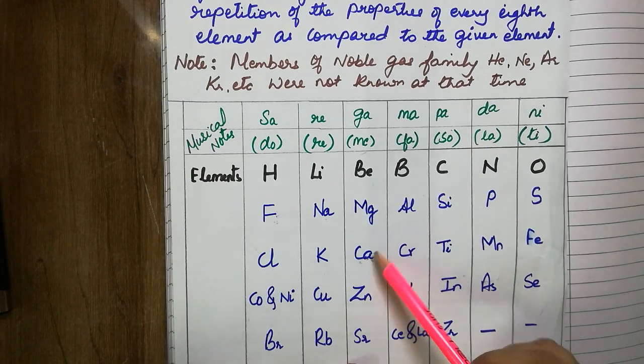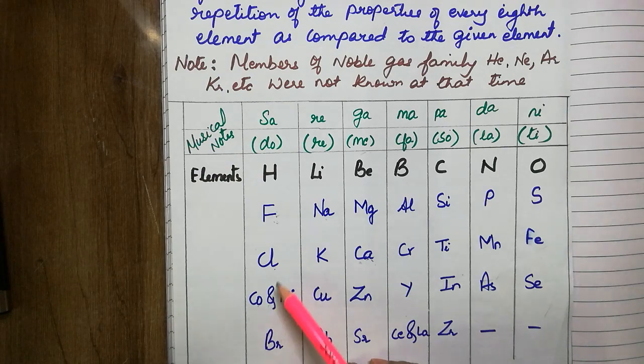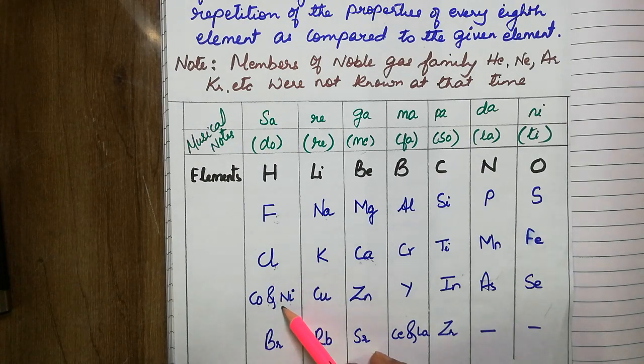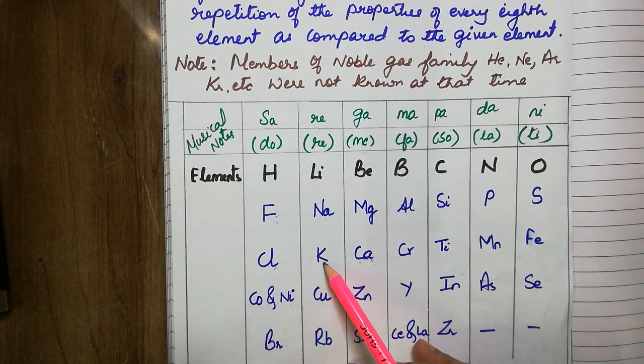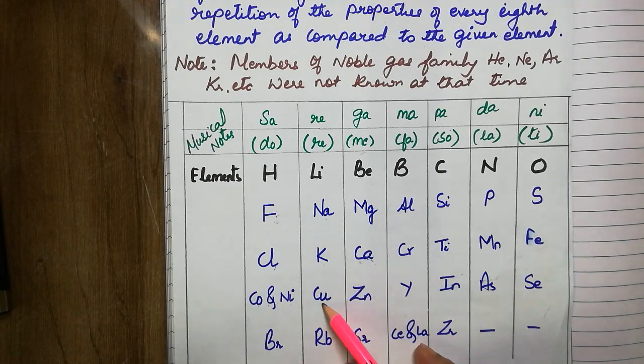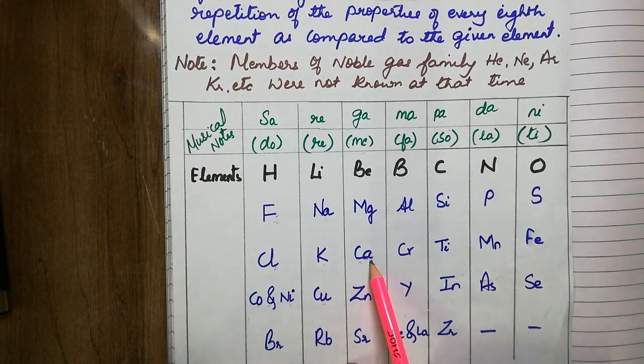For example, we can check here, chlorine and cobalt nickel, which is the next element which falls in the same group. The properties of chlorine and cobalt nickel are different. Likewise, potassium which is most reactive while copper is the least reactive. So it was successful only up to calcium.